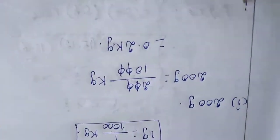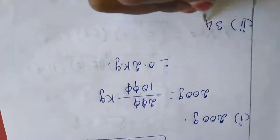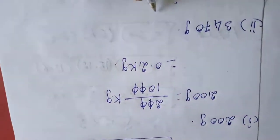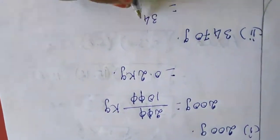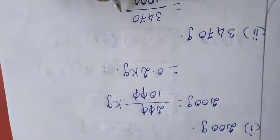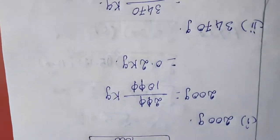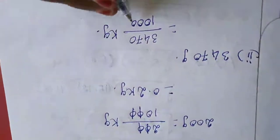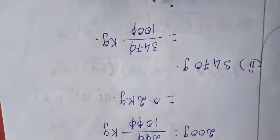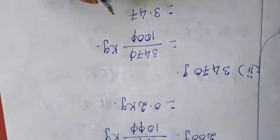Next sum is 3470 gram. So we will write 3470 divided by 1000 kilogram. One zero cancels, 2 digits before that — so 3.47 kilogram.